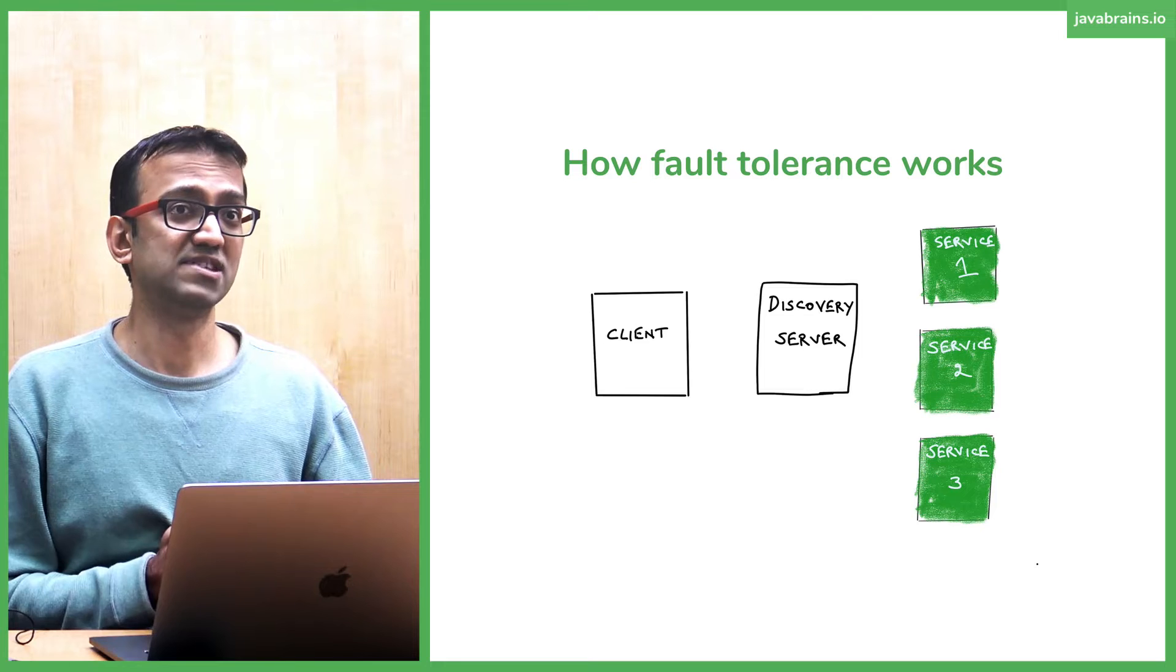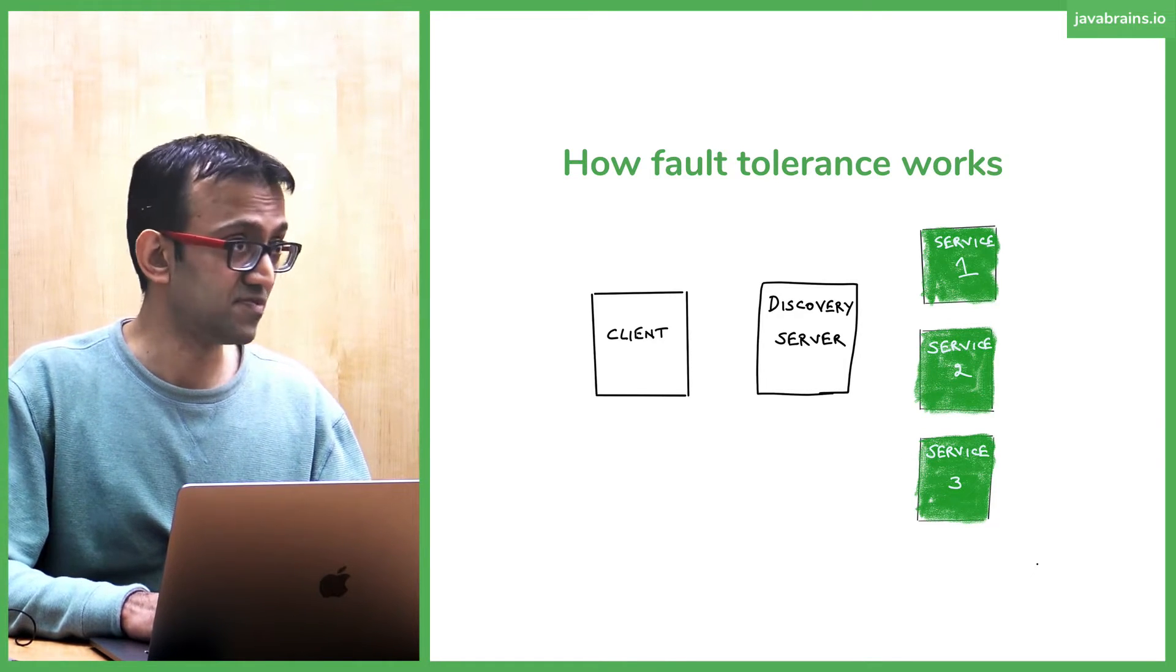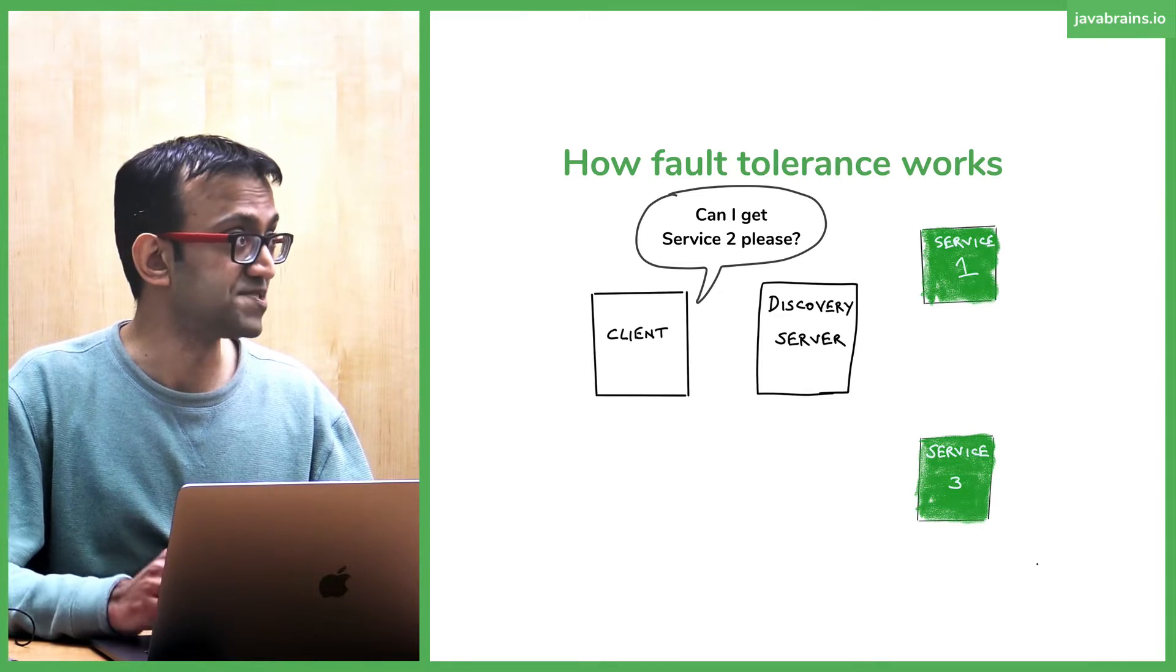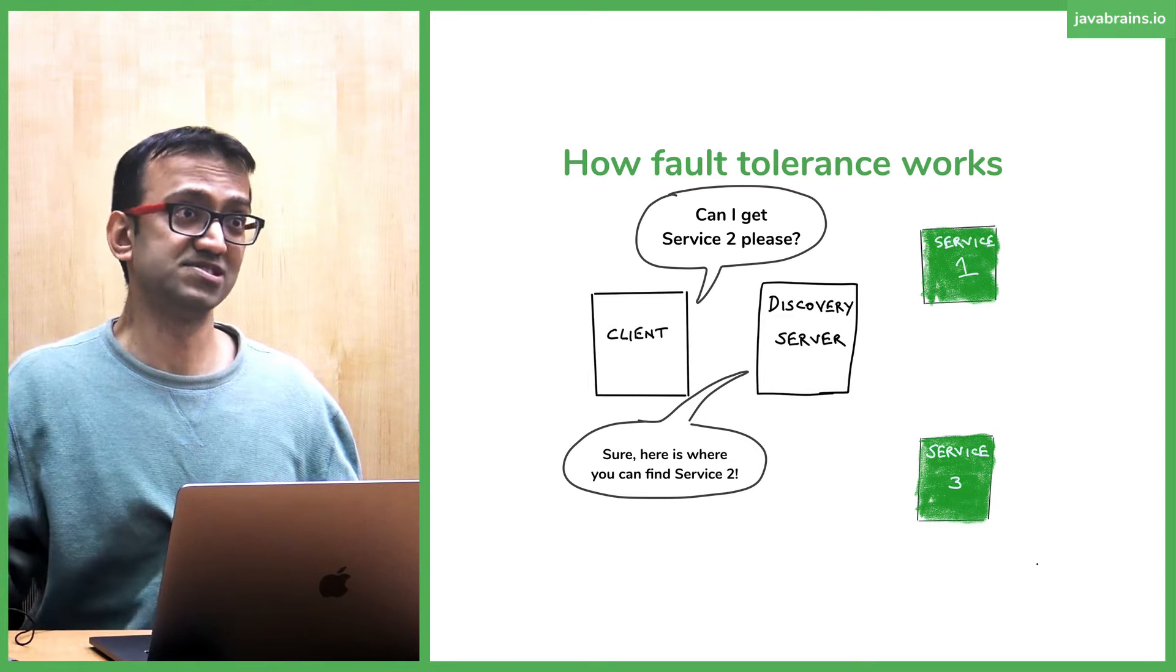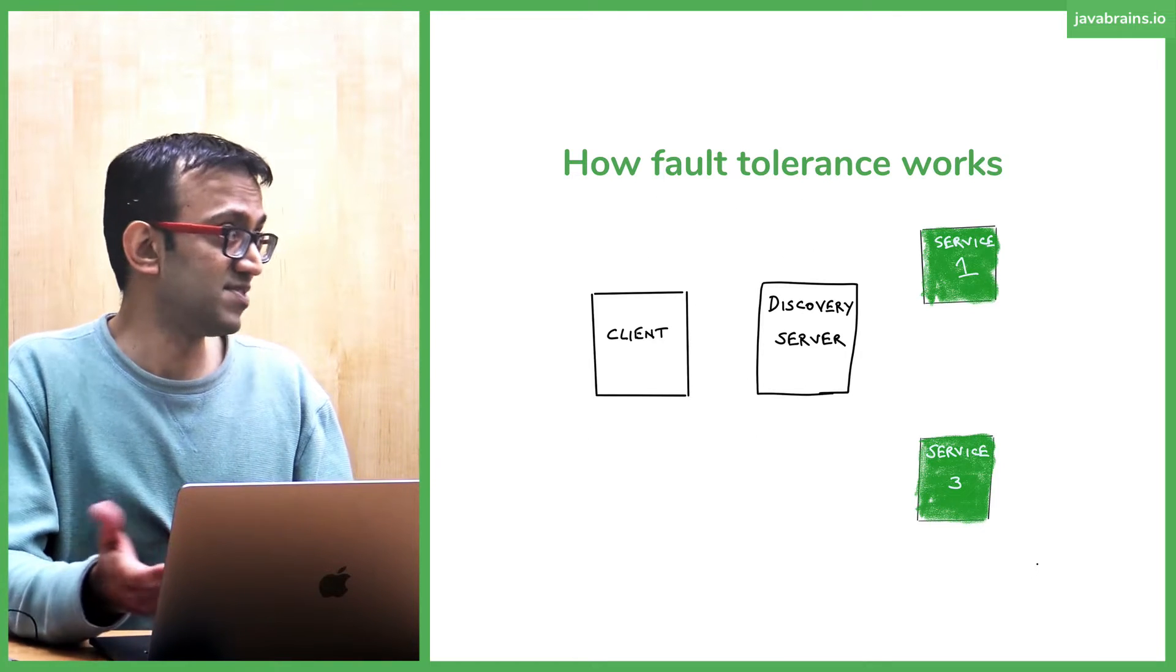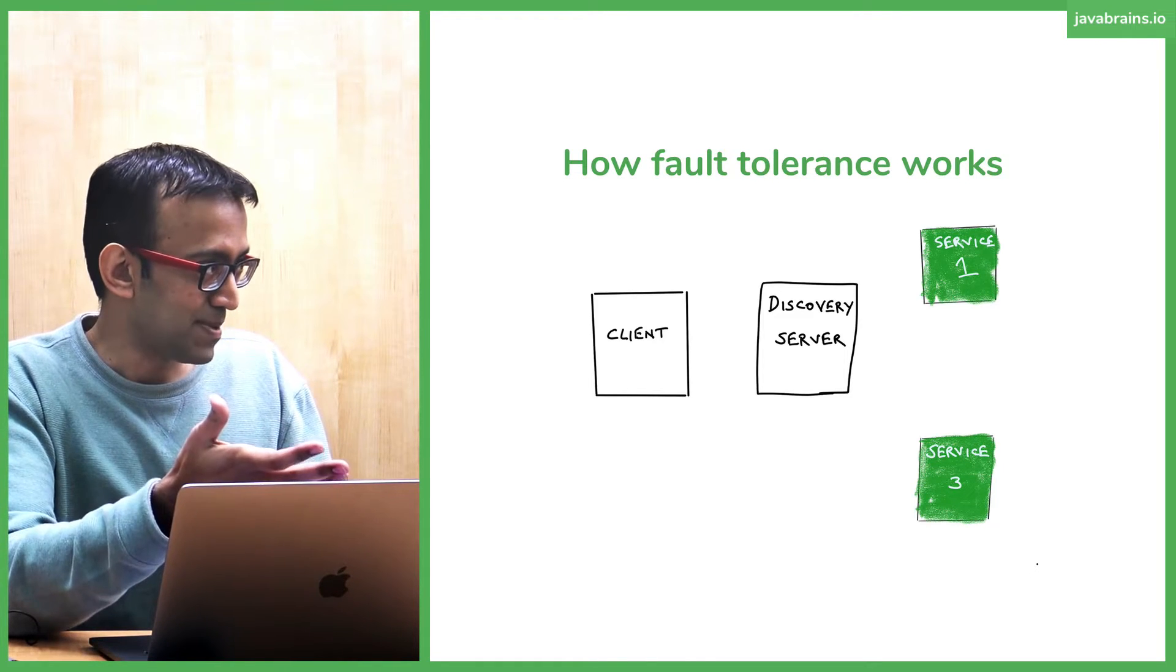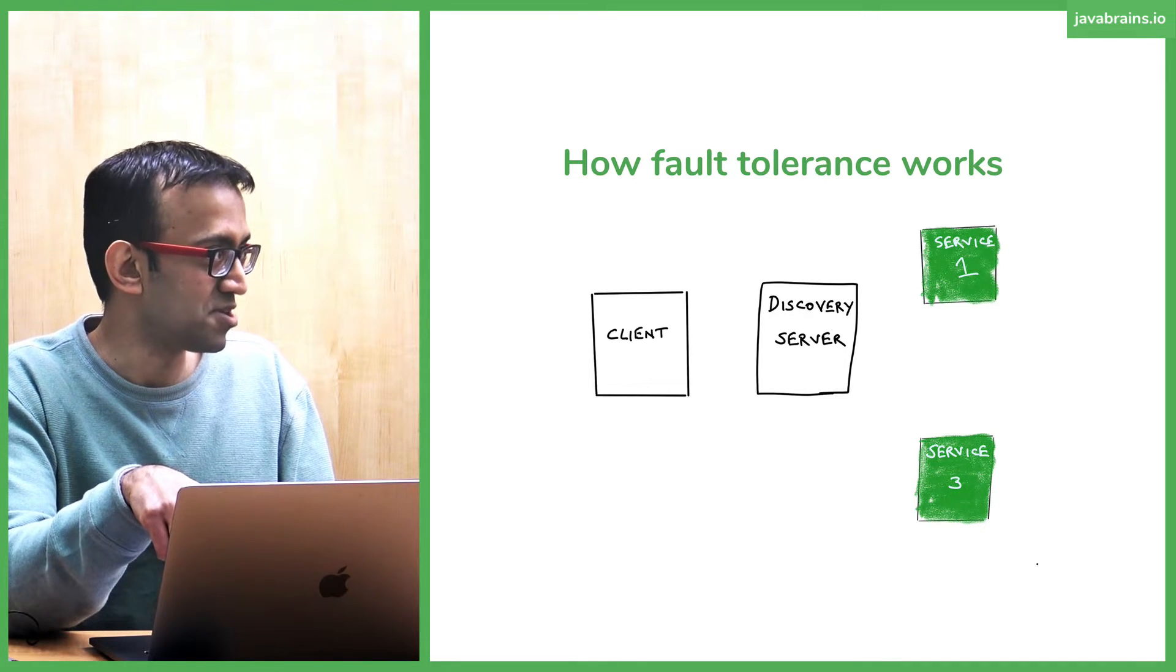How fault tolerance works. Now, what happens if a service goes down? So three services register with the service discovery. Service two goes down, and now the client says, can I get service two? Service discovery says, sure, here's where we can find service two. There was this thing which registered five minutes ago, and then gives you the address. Does the client find it? Well, no. If it's down, the service could be moved. Yes, that could happen, because the service starts up and it registers with the discovery server. Now, what's to make sure that the service hasn't gone down?